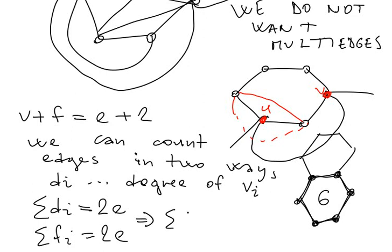So what does it mean that the sum of degrees equals the sum of face sizes? We don't know the degree sum directly, but what we know is the face size sum: since each face is of size three, it's three times the number of faces. So three times the number of faces equals 2E.